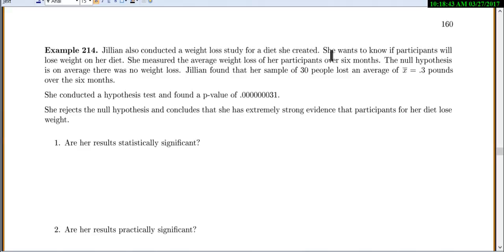Let's see. So Jillian also conducted a weight loss study for a diet she created. She wants to know if the participants will lose weight on her diet. She measured the average weight loss of her participants over six months. The null hypothesis is that on average there was no weight loss. Jillian found that her sample of 30 people lost an average of 0.3 pounds over six months. She conducted a hypothesis test and found a p-value of 0.000031. So that's a really, really small p-value.